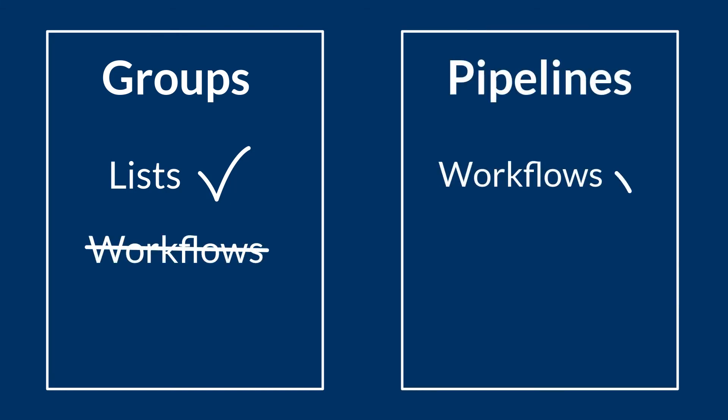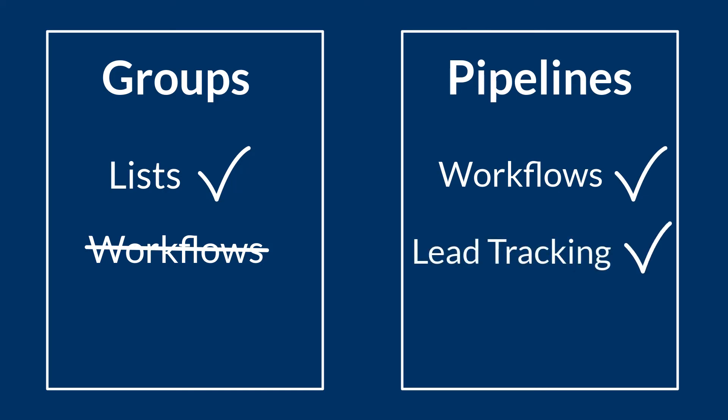Pipelines, however, are. Pipelines are best for tracking labels or statuses that do change over time, whereas groups are often best for things that don't change often, like all of your current clients or a list of all your vendors.